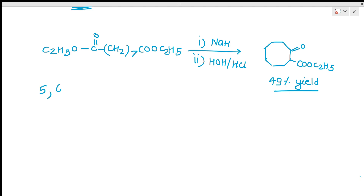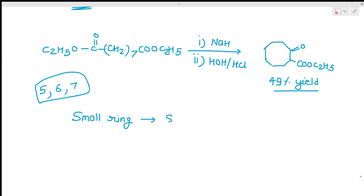5-membered, 6-membered, and 7-membered rings are formed very easily. But 8-membered and 9-membered rings are not formed so easily. This method is good for forming 5- to 7-membered rings. If we are forming small rings there will be ring strain, making them unstable. So Diekmann condensation cannot be used for small rings or for 9- to 12-membered rings — only for 5-, 6-, and 7-membered rings.